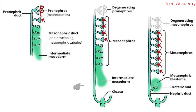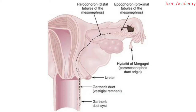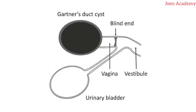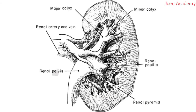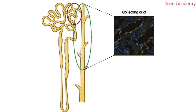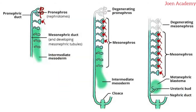In females, the mesonephric duct gives rise to the following structures. The first is the appendix of the epoophoron. The duct of Gartner also comes from the duct. The ureteral pelvis, calyces and the collecting duct also come from the duct as well.